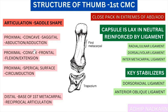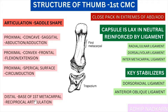Those are the proximal articulations for the saddle shape. Distally, we have the base of the first metacarpal, and the articulation there is exactly opposite — reciprocal — to the proximal articulation. So where the trapezium is concave, the metacarpal base is convex, and vice versa.